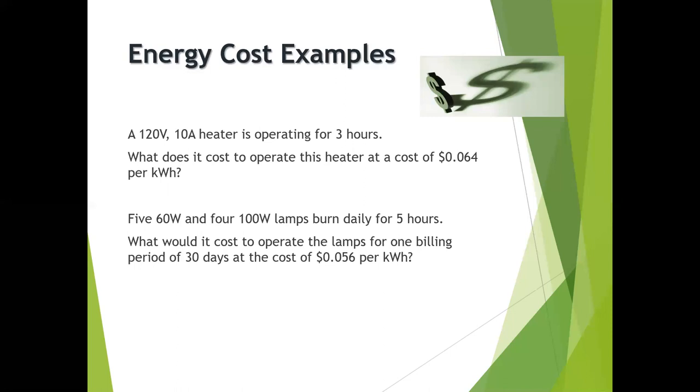In the second example, if we have five 60 watt and four 100 watt lamps and they burn daily for five hours, what is that going to cost? You take your five times 60 is 300 watts, four times 100 is 400 watts. We find our total power by adding those together at 700 watts or 0.7 kilowatts. Remember, knowing our units is important when we're working with these formulas.